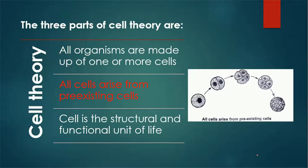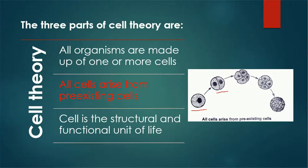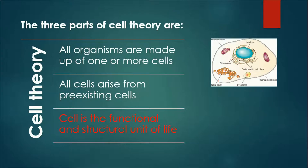The second part of cell theory is that all cells arise from pre-existing cells. New cells originate by the division of pre-existing cells. In this diagram, one cell undergoes cell division and is converted into two cells, meaning the new cell is formed from the pre-existing cell. If that cell is absent, the new cell will not form. No cell can generate spontaneously from organic or inorganic matter.